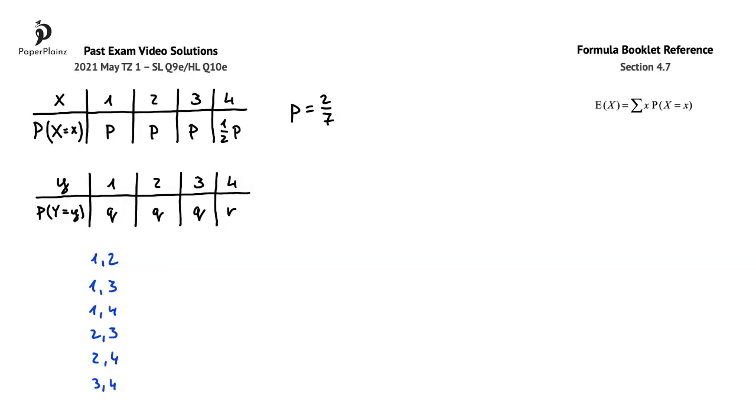In the tables above, we are given the individual probabilities for each possible outcome on the two dice. So, using the tables, we can write an expression for the probability of each of the six outcomes that we just listed. The probability of getting a 1 on die A is P, and the probability of getting a 2 on die B is Q. Therefore, the probability of this outcome is P times Q.